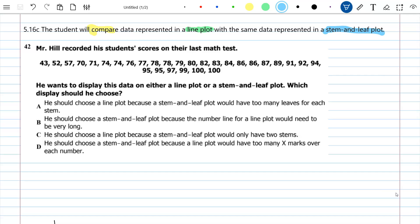Mr. Hill recorded his students' scores on their last math test, and then there are all the scores. And if you notice, they did something that we tell you to do with your data all the time. They've put them in order for us. So I'm starting with a score of 43, and I go all the way to the end where there are a couple of hundreds.